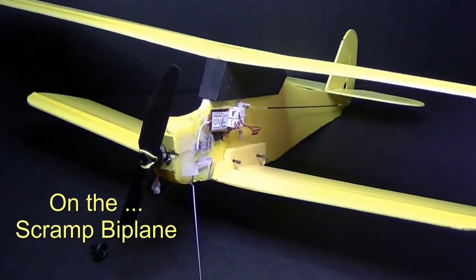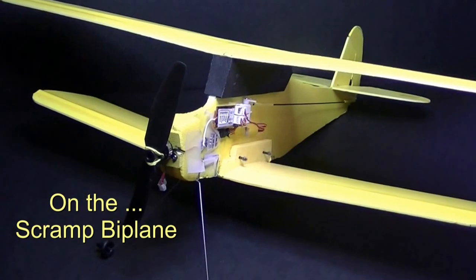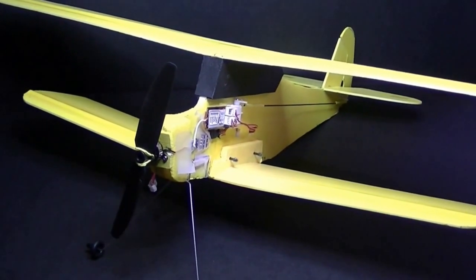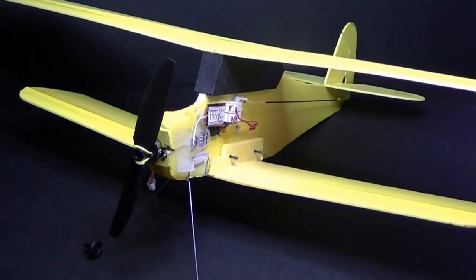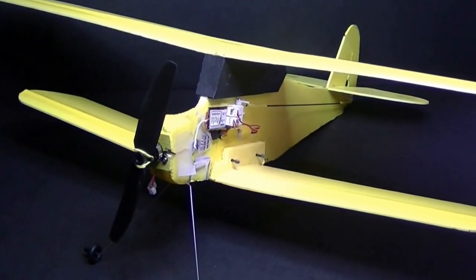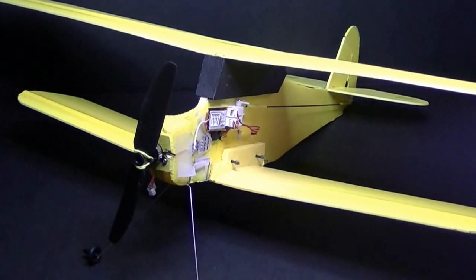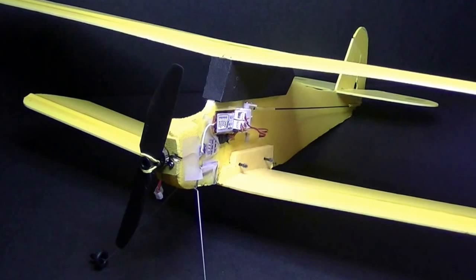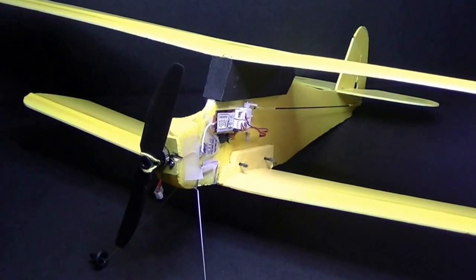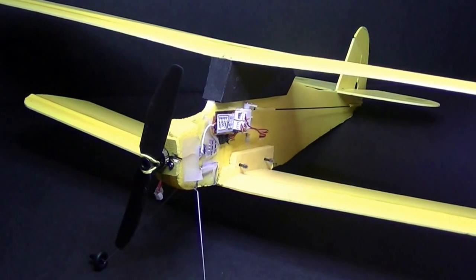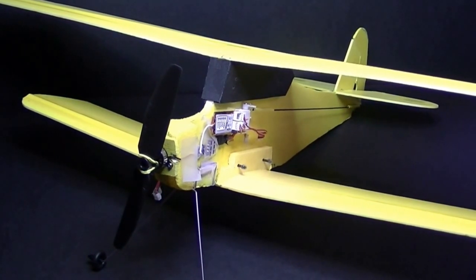Okay, so here is the Scramp biplane. You've seen it fly and the build video of the lower wing. Right now I want to talk about the power system - it's a one-cell brushless power system. I want to cover that in detail this time and show you how to actually build the wiring harness, hook it up, and test everything.